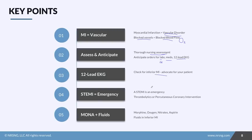Check your 12-lead for an inferior MI and advocate for your patient to receive fluids instead of morphine and nitrates — that's important to remember. A STEMI is an emergency and needs immediate intervention with thrombolytics and PCI. And always remember: morphine, oxygen, nitrates, and aspirin for most MI — but fluids for inferior MI. MONA plus fluids.